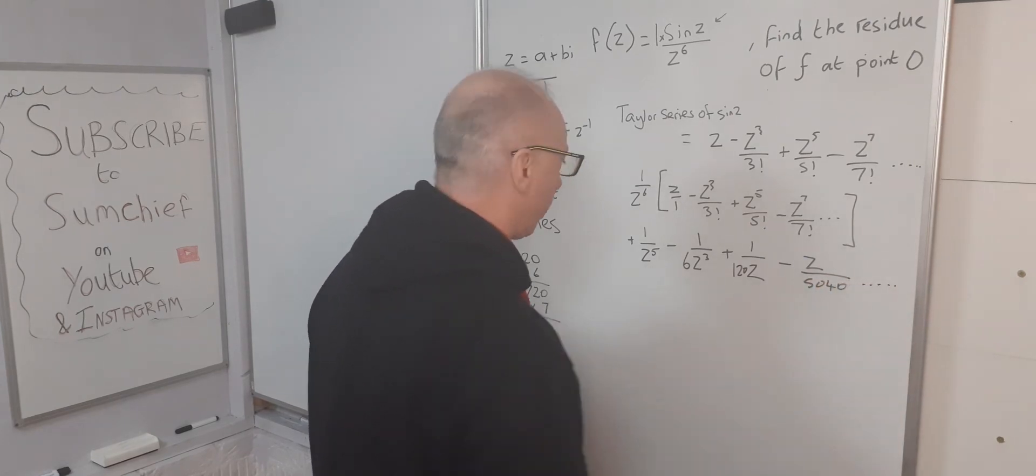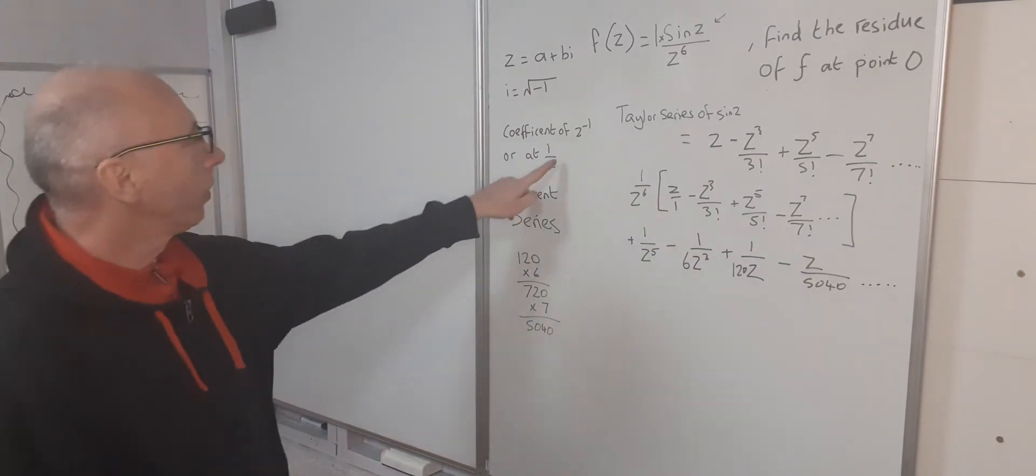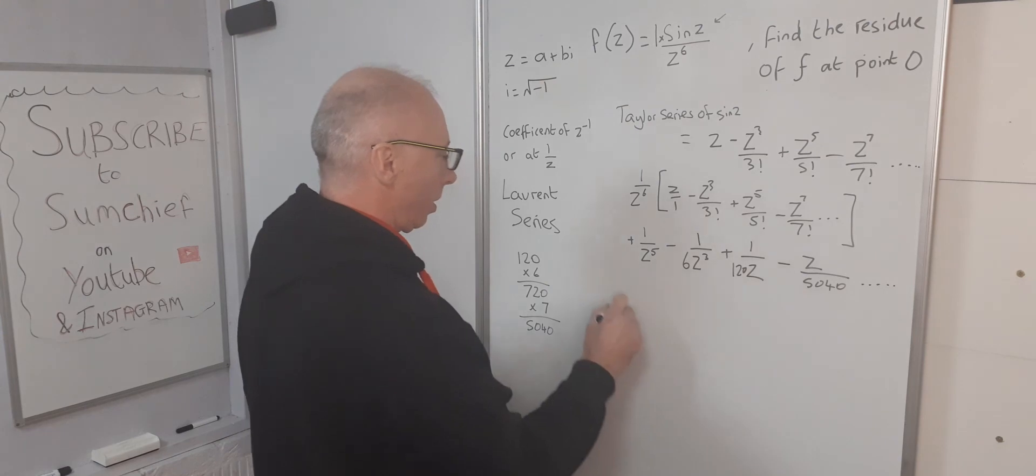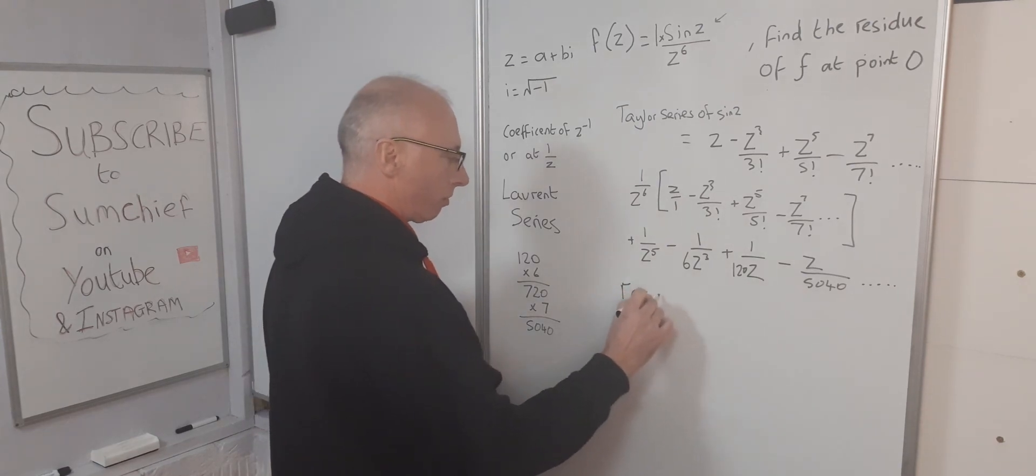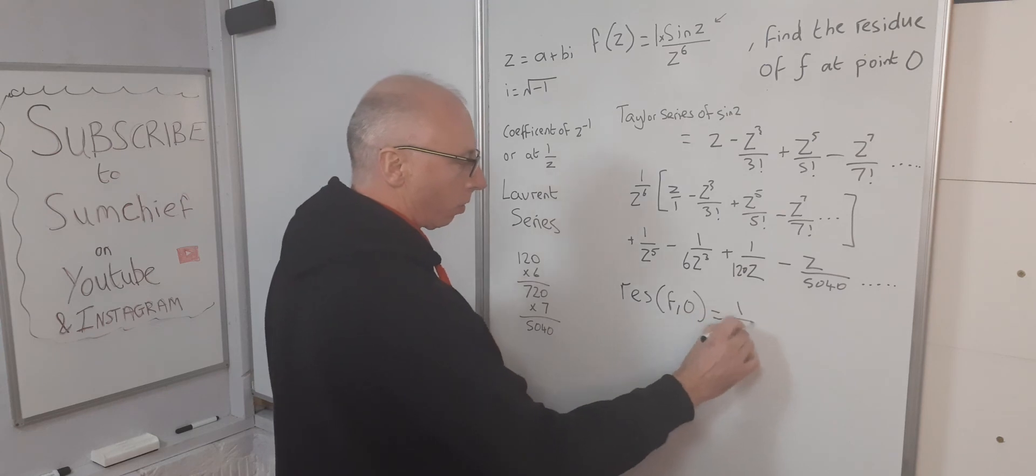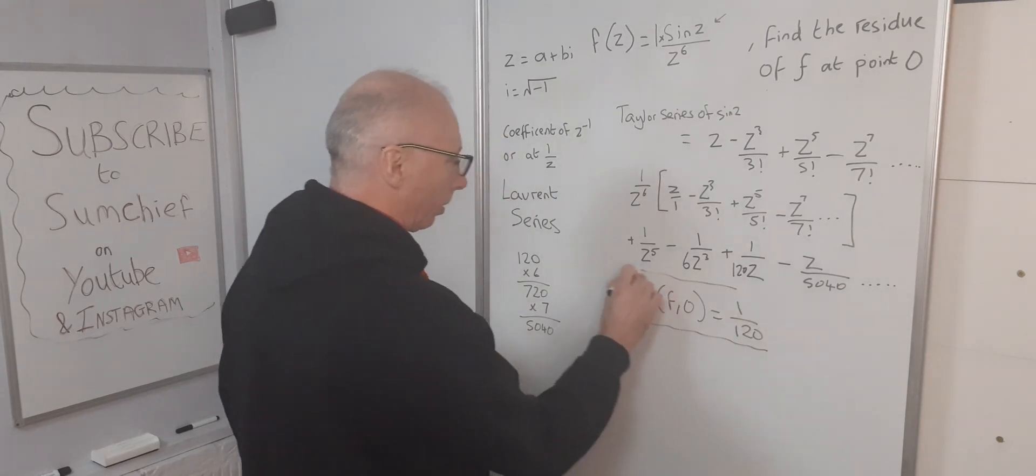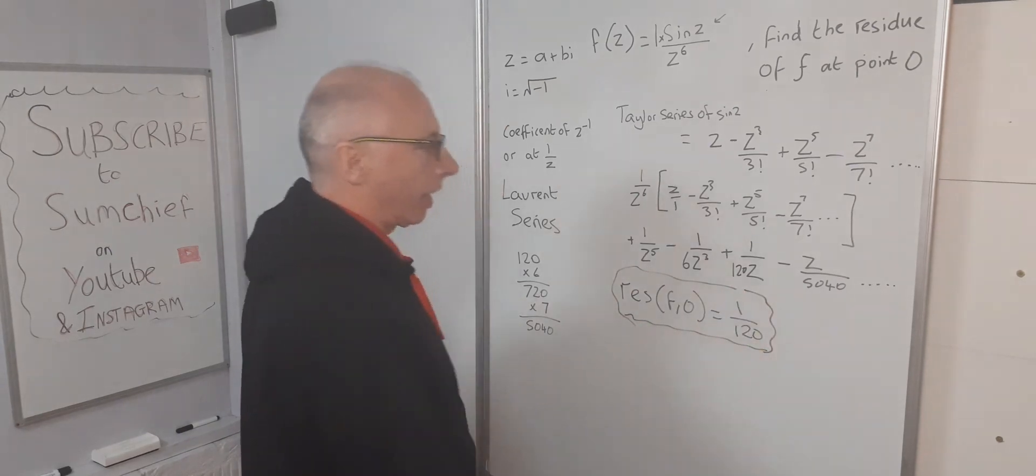We're looking for the coefficient of 1 over z, so that's this one. Therefore we can say the residue of f at 0 equals 1 over 120. There we go, that is our answer.